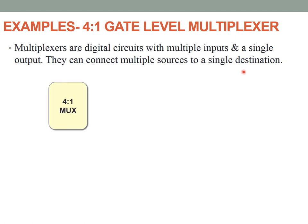A 4-to-1 multiplexer has four inputs named as I0, I1, I2 and I3. The second number tells you that we have only a single output, named Y. A 4-to-1 mux will have two select lines, named S1 and S0. This is a simple logic diagram of a 4-to-1 multiplexer.